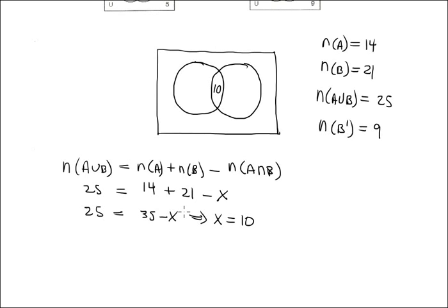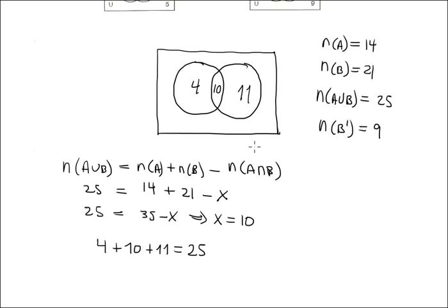Adding up: 4 (A only) + 10 (intersection) + 11 (B only) = 25 elements total inside A and B. Now to find the universal set: |B| + |B'| = |Universal|. Using |B| = 21, and cardinality of B complement is 9, the universal set total is 30.